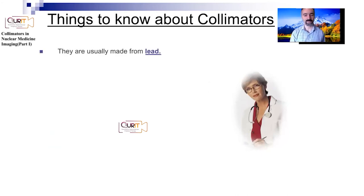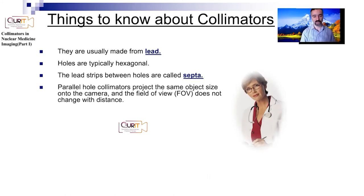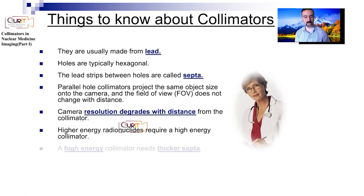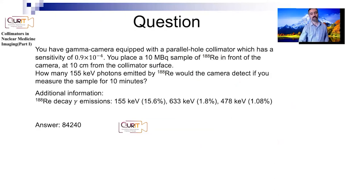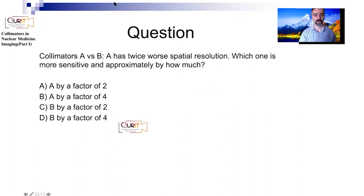Key things to know about collimators: they are usually made from lead; holes are typically hexagonal; the lead strips between holes are called septa; parallel collimators project the same object size regardless of distance from the camera; camera resolution degrades with distance; higher energy isotopes require high energy collimators with thicker septa. There is also a practice problem involving a parallel collimator with a rhenium-188 sample — try to calculate how many counts you'd get in 10 minutes.